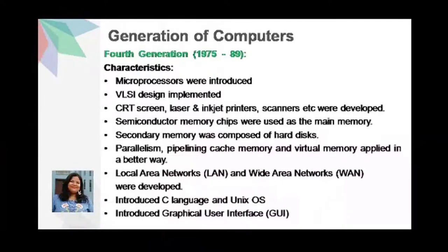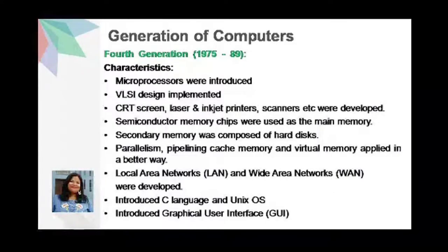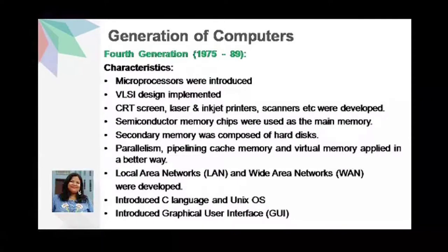The fourth generation started in 1975 and lasted till 1989. Examples of computers in the fourth generation are Intel's 8080, Motorola's 6800, Apple II, and Cray. Microprocessors were used as CPU — complete processors and a large section of main memory could be implemented in a single chip. VLSI design was implemented, as tens of thousands of transistors could be placed on a single chip.